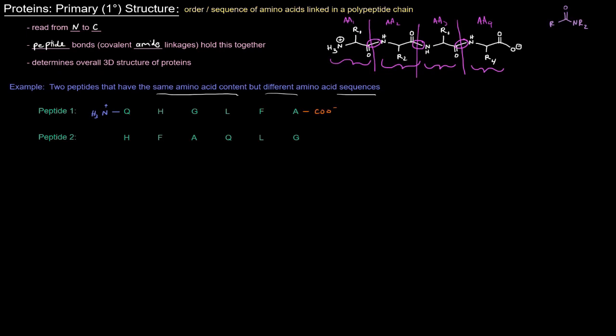And over here, peptide two, we have the same amino acids, just in a different order. H, F, A, Q, L, G, as opposed to Q, H, G, L, F, A. So here, this is the amino terminal amino acid. And then over here, we have the carboxy terminal amino acid, the glycine. So they're the same amino acid content, but different amino acid sequences.